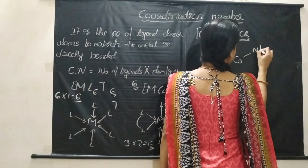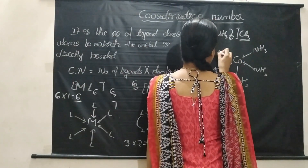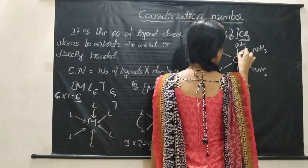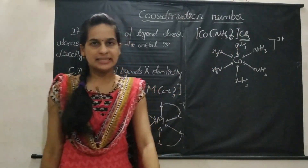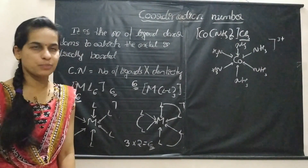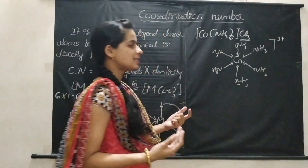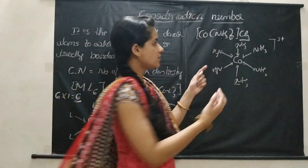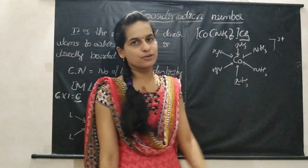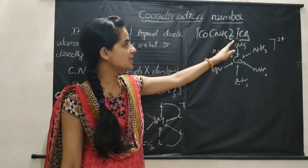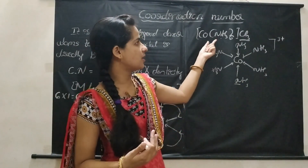Here, [Co(NH3)6]3+ is the coordination sphere. The donor atom of ammonia is nitrogen — in NH3 there are four atoms: one nitrogen and three hydrogens. Nitrogen donates the pair of electrons to the cobalt ion to form the coordinate bond, so nitrogen is the donor atom of the ligand. Cobalt is attached to 6 ammonia ligands. Three chloride ions are counter ions, so while calculating coordination number, just give attention to the ligands.